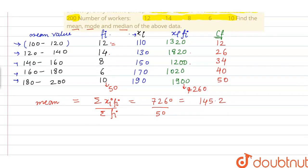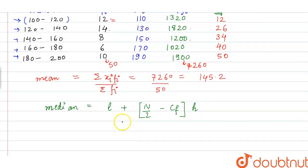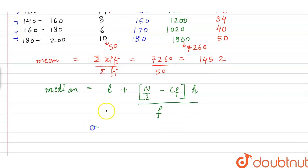Now we solve for the median using the formula: Median = L + [(n/2 − cf) / f] × h, where L is the lower limit of the median class, n is the total number of frequencies, cf is the cumulative frequency of the preceding class, f is the frequency of the median class, and h is the class height.